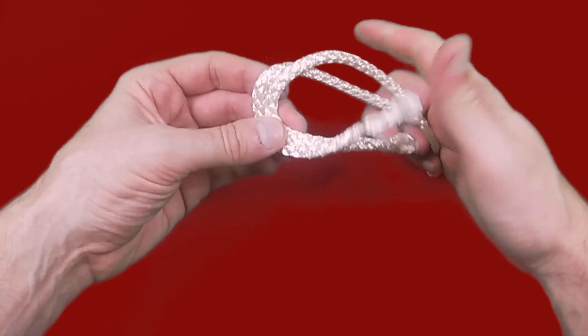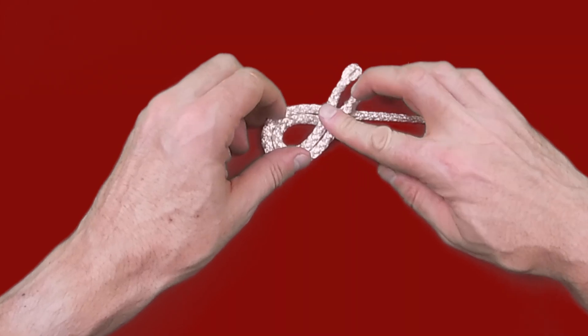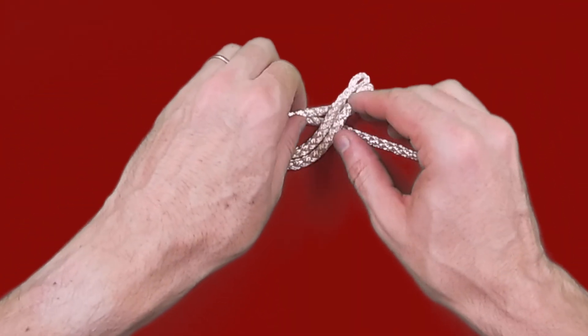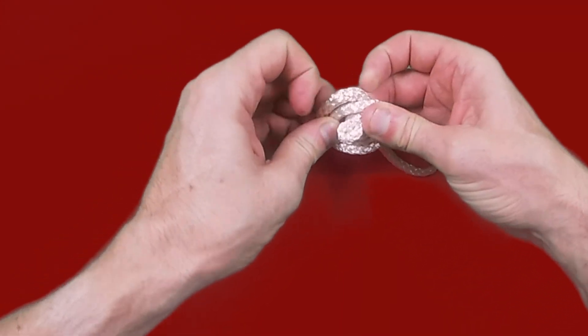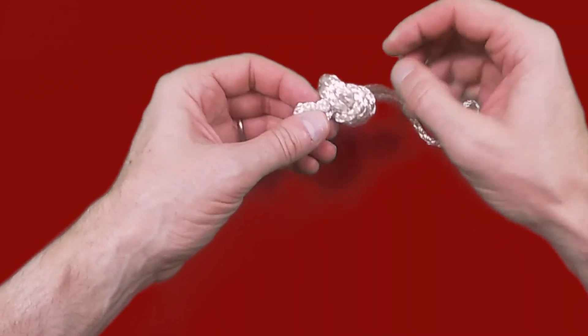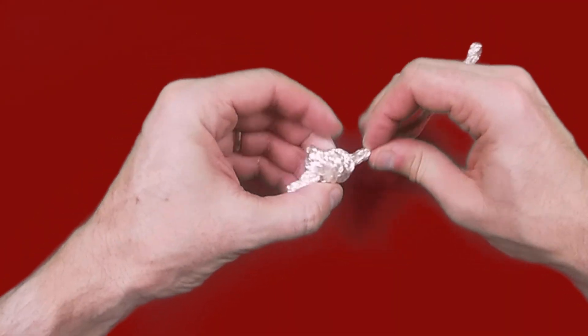It's important when creating the overhand knot to make sure that the lines stay parallel with no twists. Take the ends and bring them up through the loop that you've created, pulling the knot tight and getting it as close to the end of the splice as possible.